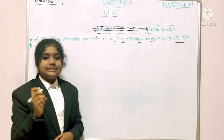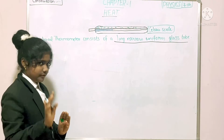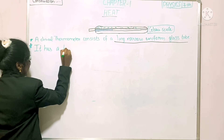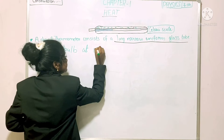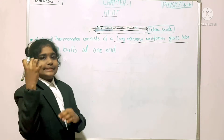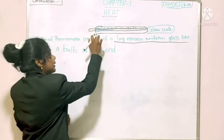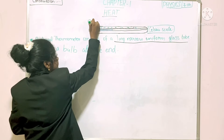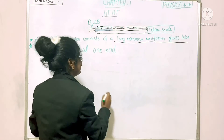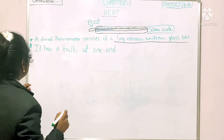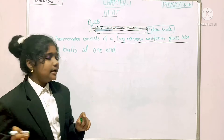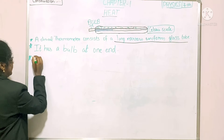The clinical thermometer consists of a long narrow uniform glass tube, and it has a bulb at one end. This bulb — not a light bulb like the ones in our houses — is the rounded structure at one end of the thermometer, and it is called the bulb.